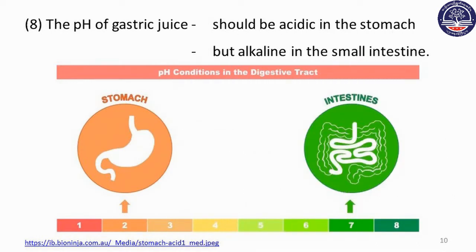The pH of gastric juice should be acidic in the stomach.